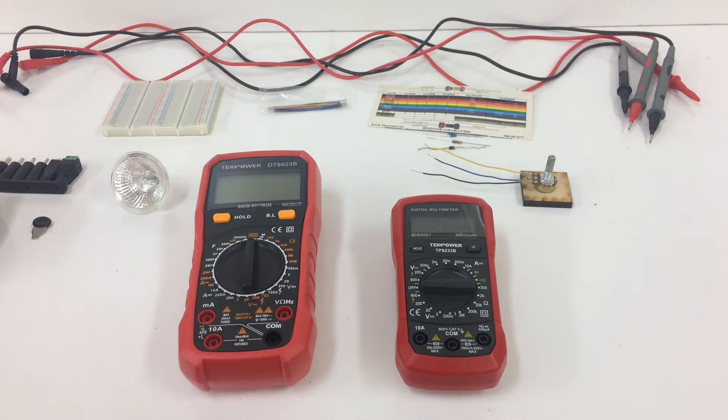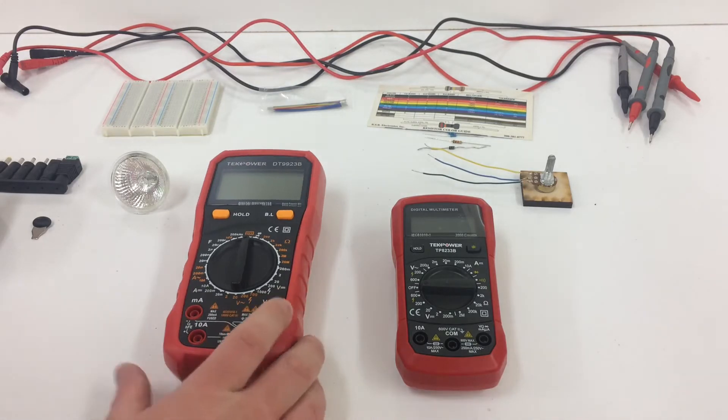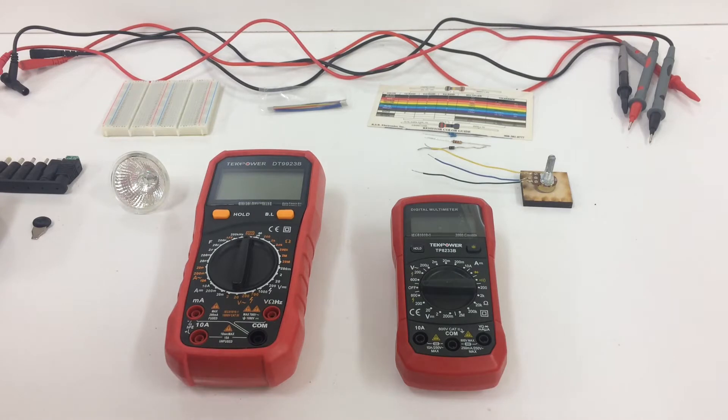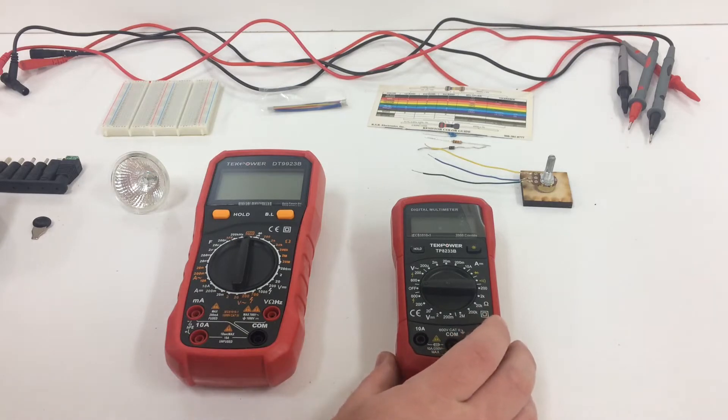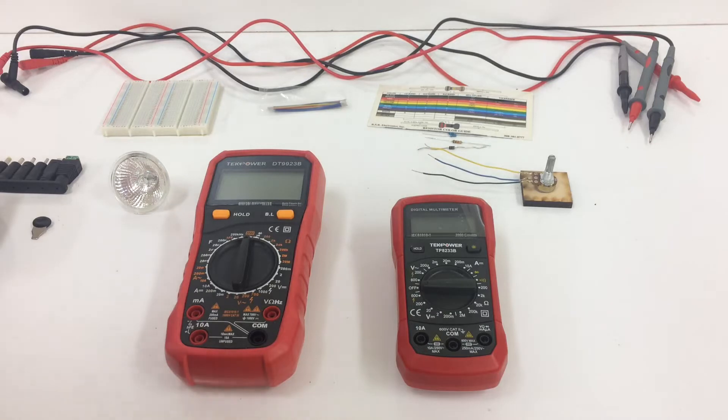Hi everyone and welcome to the Sierra College Physics Department lab setup for Ohm's law and electrical resistance. As part of your lab kit you'll see many items in front of you including the TechPower D6 or DT9923B multimeter and the IEC61010-1 multimeter. You're going to need both meters to do all three parts of this experiment. Please make sure to see what parts you are assigned based on your class.